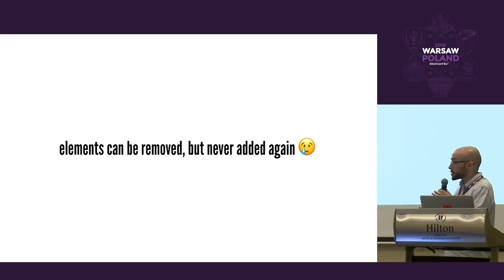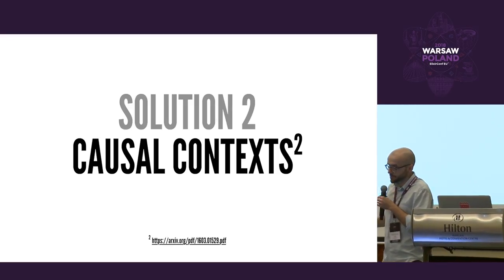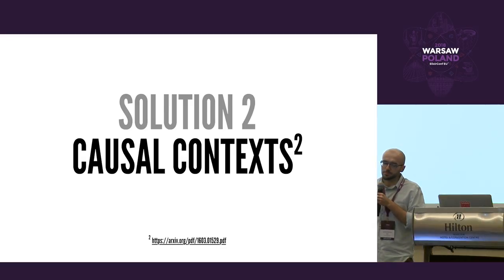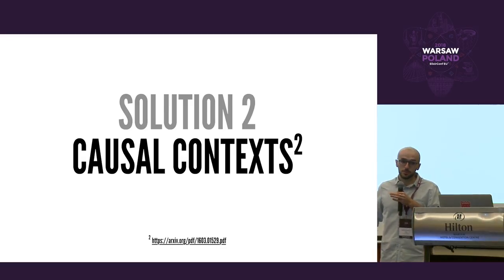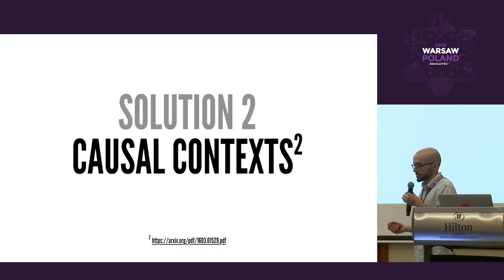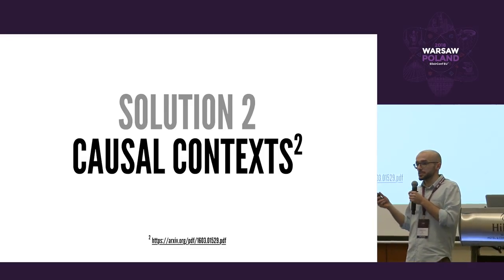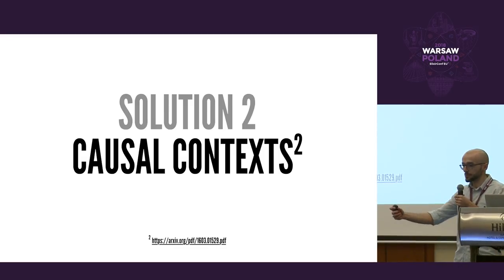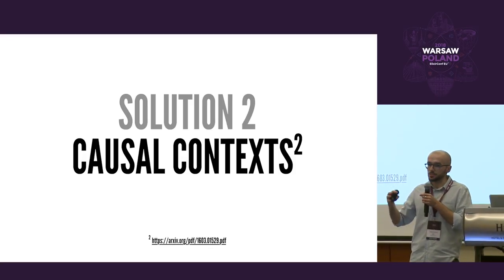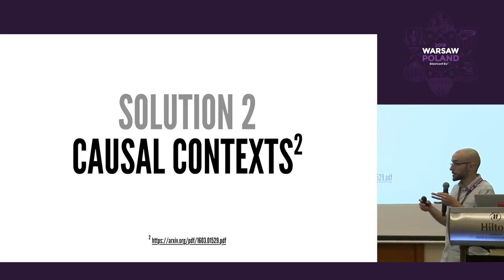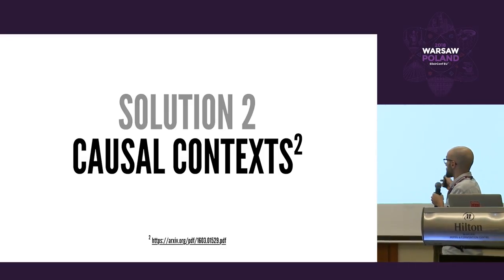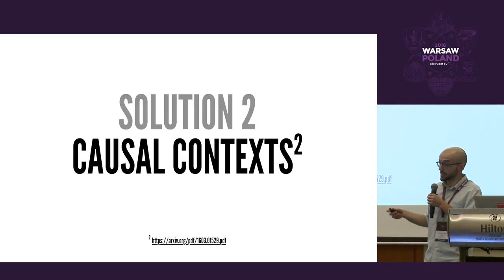Academia has our back here. We can use causal contexts, also referred to as version vectors or vector clocks. The idea is that our data structure should contain a value representing the version of that particular copy, which is used to merge different CRDT values in a semantically correct way and resolve conflicts. I really recommend reading the paper linked — it explains one of the possible implementations of this really well.